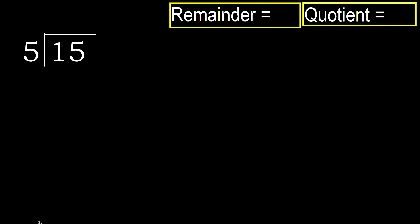15 divided by 5. 1 is less, therefore next. 15 is not less, therefore with 15. 5 multiplied by which number is nearest to 15.